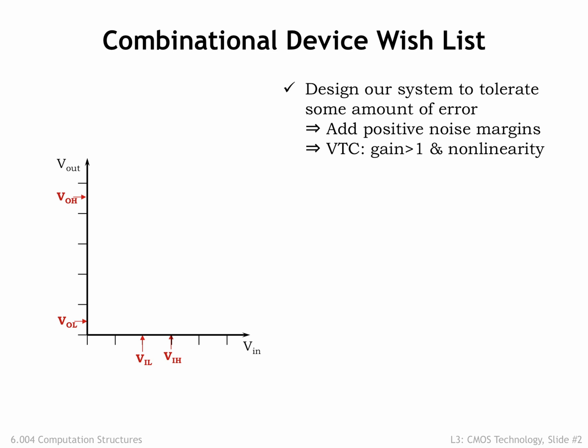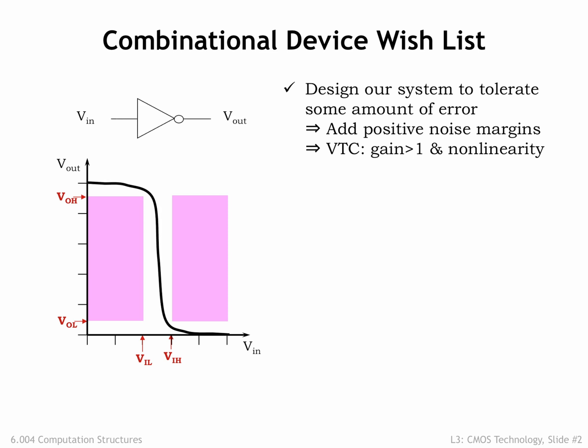Since a combinational device must, in the steady state, produce a valid output voltage given a valid input voltage, we can identify forbidden regions in the VTC, which for valid input voltages identify regions of invalid output voltages. The VTC for a legal combinational device could not have any points that fall within these regions. The center region, bounded by the four threshold voltages, is narrower than it is high, and so any legal VTC has to have a region where its gain is greater than 1, and the overall VTC has to be non-linear.